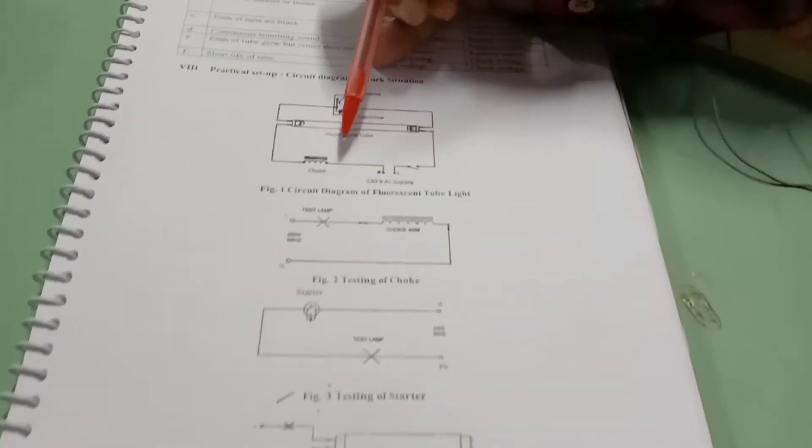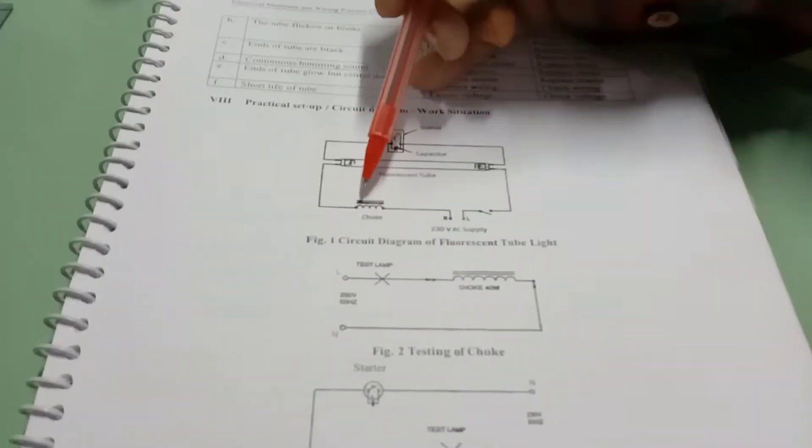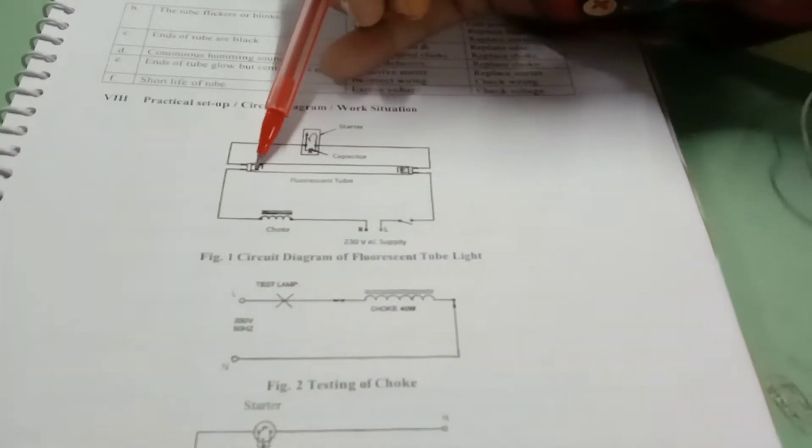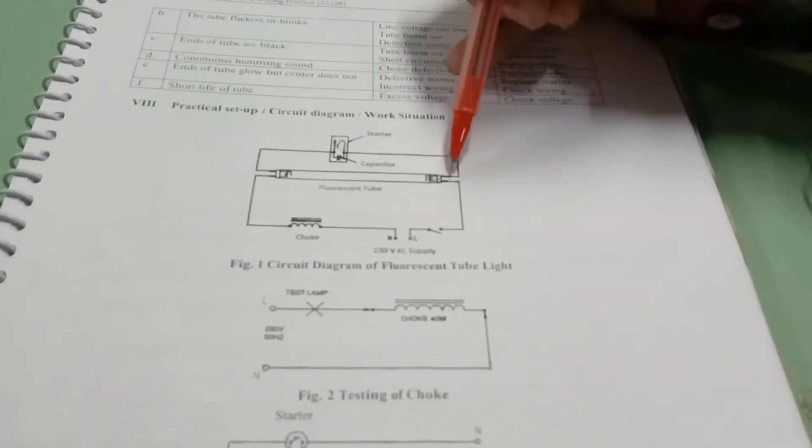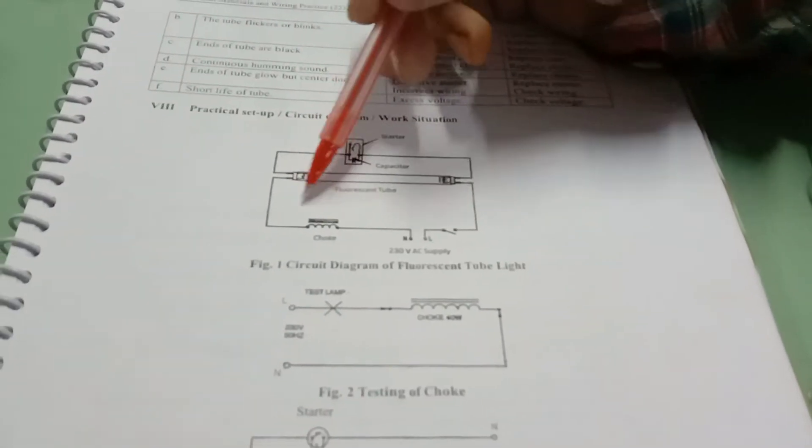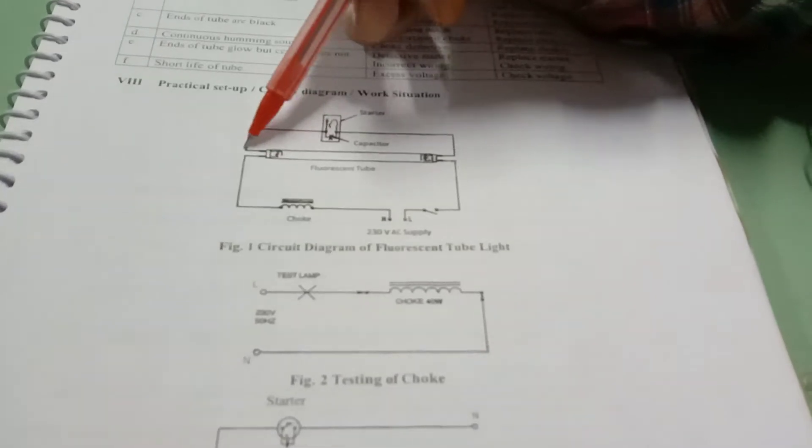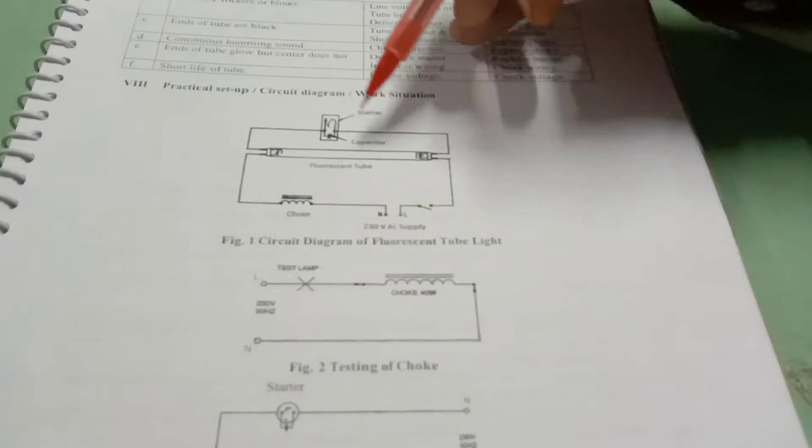You will see the connection diagram of this tube light. Here you can observe that in series we have connected the choke. Then these are the two terminals of tube light and here on the other hand. Out of these two terminals we have connected one choke and another terminal we are going to connect to the starter.